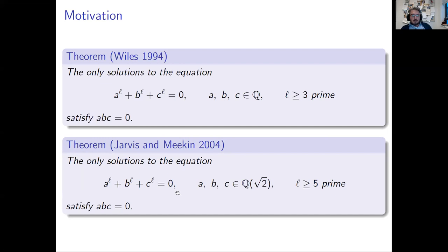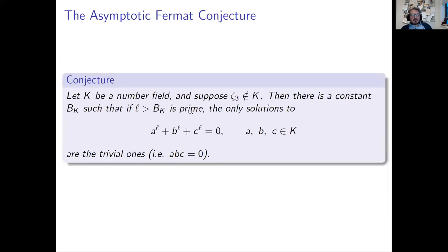So you can ask: what should the statement be for a general number field? What should the conjecture be? Here's an attempt at formulating a conjecture, which I've called the Asymptotic Fermat Conjecture. It says that if K is a number field that does not contain the cube roots of unity ζ₃, then there's a constant B_K such that if the exponent L is bigger than B_K, the only solutions to the Fermat equation with exponent L and unknowns in K are the trivial ones satisfying ABC equal to zero.